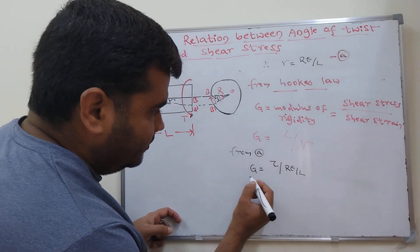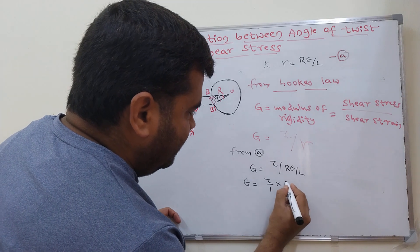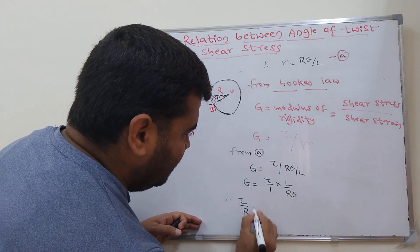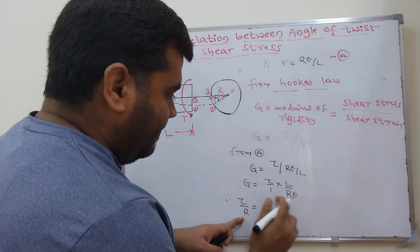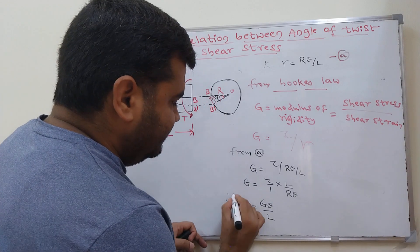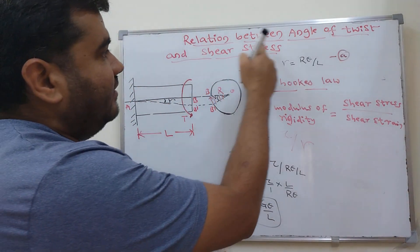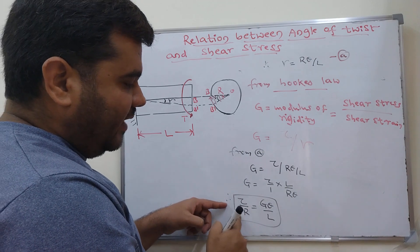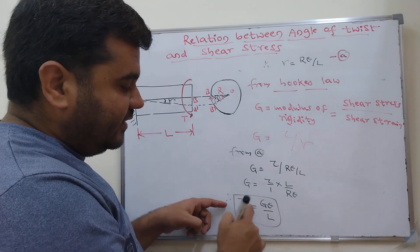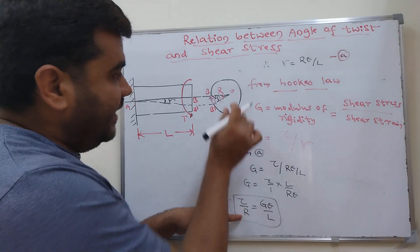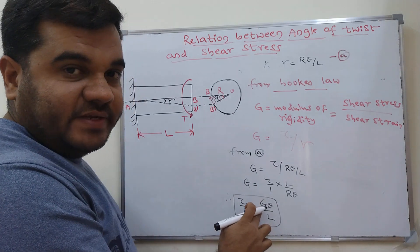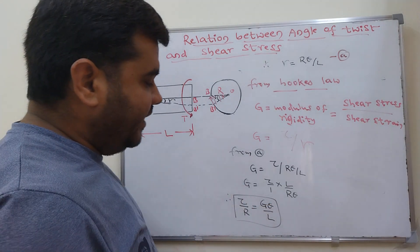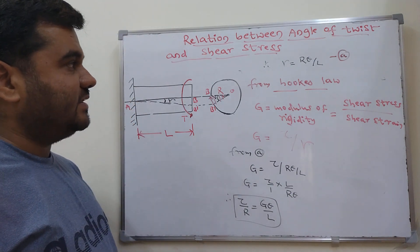Therefore, G = τ × L/(Rθ), which gives us τ/R = Gθ/L. This is the relation between angle of twist (θ) and shear stress (τ), where τ is shear stress, R is radius of the shaft, G is modulus of rigidity, θ is angle of twist, and L is the length of the bar.